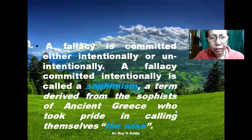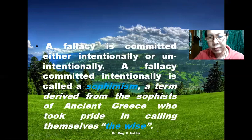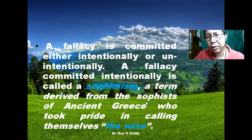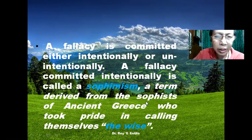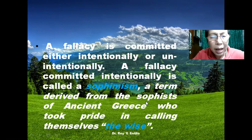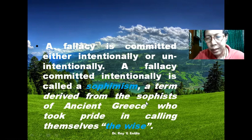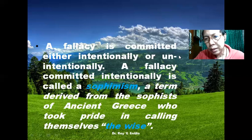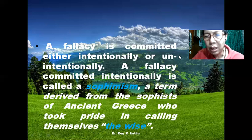The term 'fallacy' is derived from the Sophists of ancient Greece, who took pride in calling themselves the wise men. The Sophists are people who claim to be philosophers but they just want money. They can argue either side, black or white. They are not actually concerned about the truth; they are concerned about winning arguments for the sake of money. A philosopher, by contrast, is a lover of knowledge, a lover of wisdom, a lover of truth.